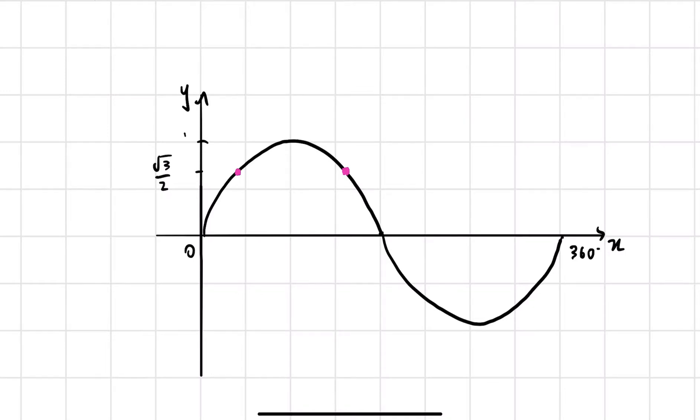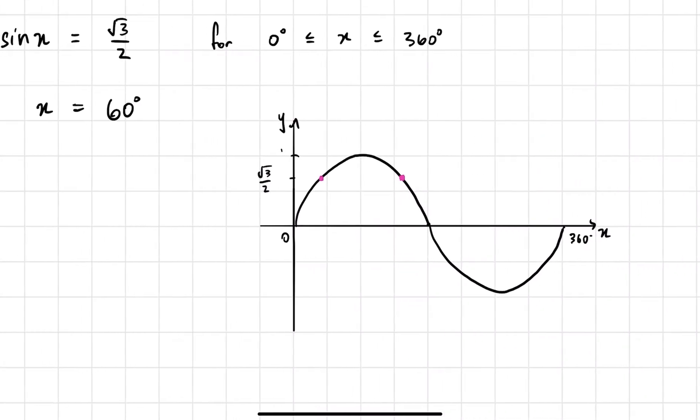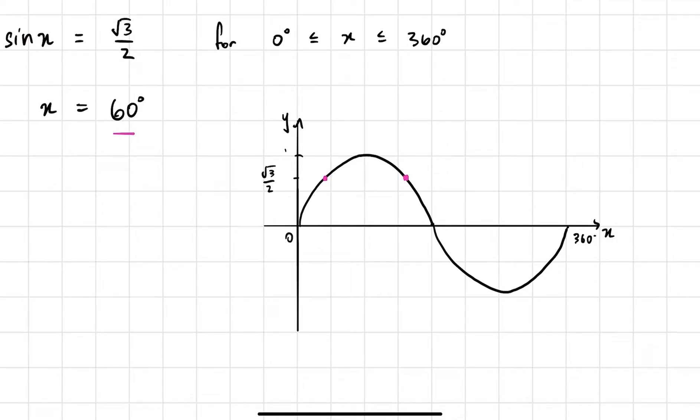At these two positions, our sine curve is equal to root 3 on 2. And what we found, what we mean when we say 60 degrees over here, we mean that is 60 degrees. And that is definitely an answer that will give us root 3 on 2. But there's actually another answer. So there's this guy as well.